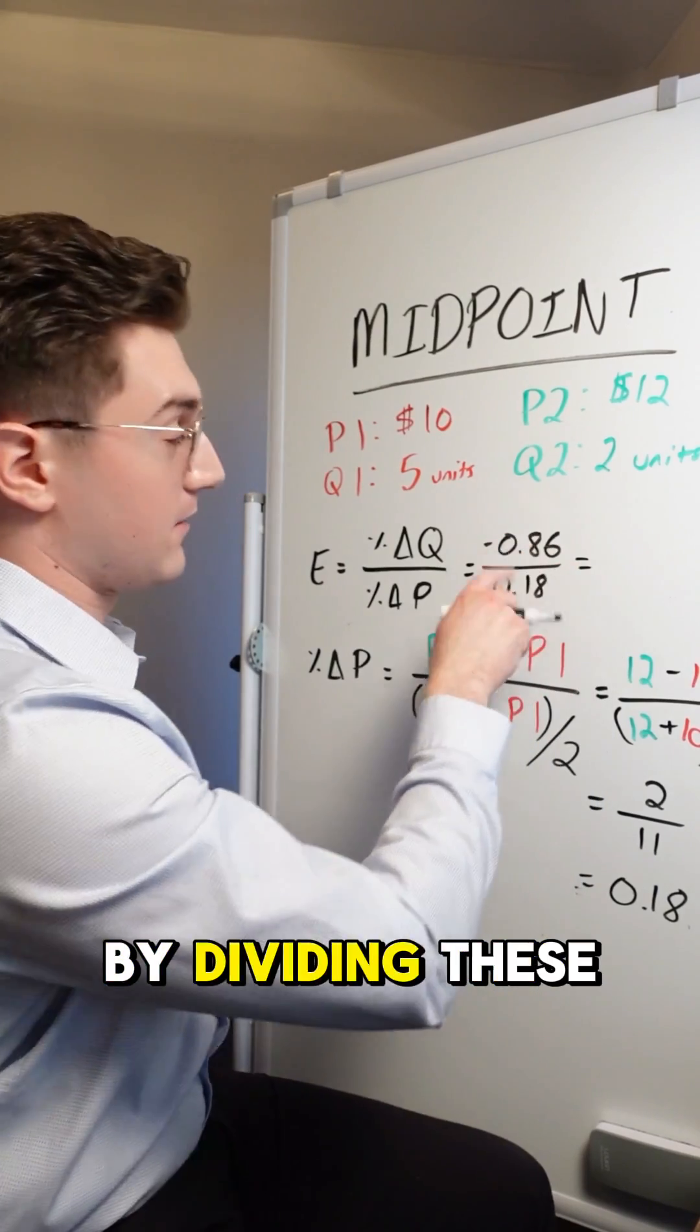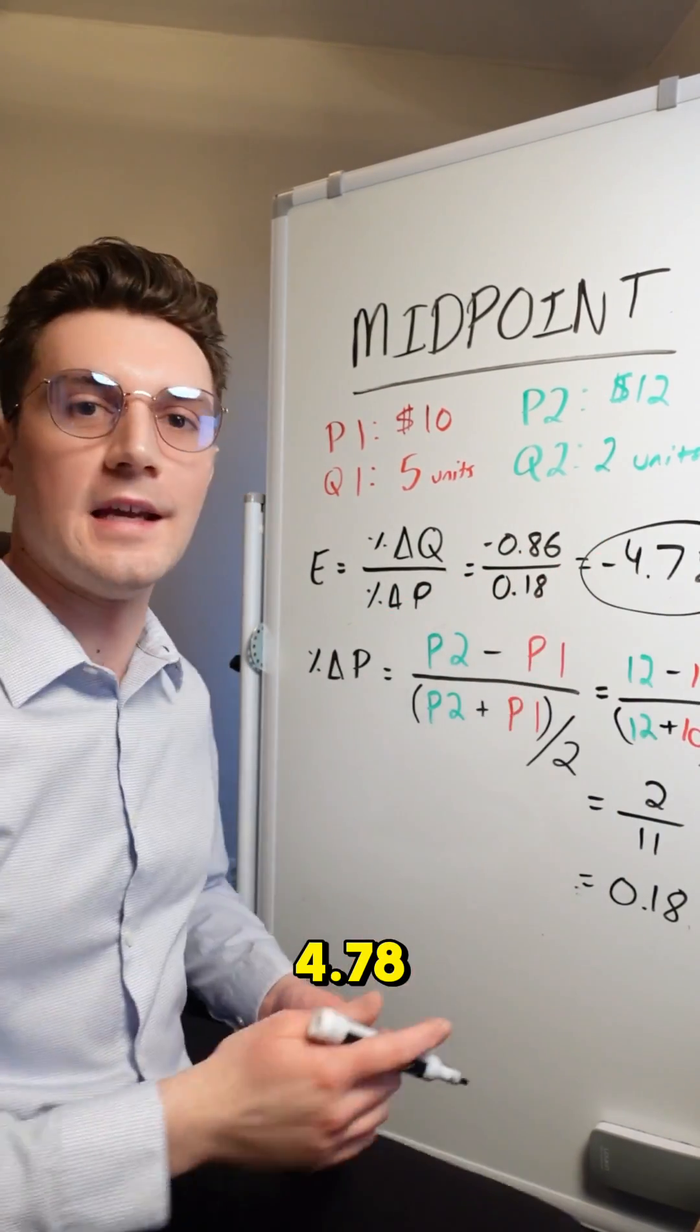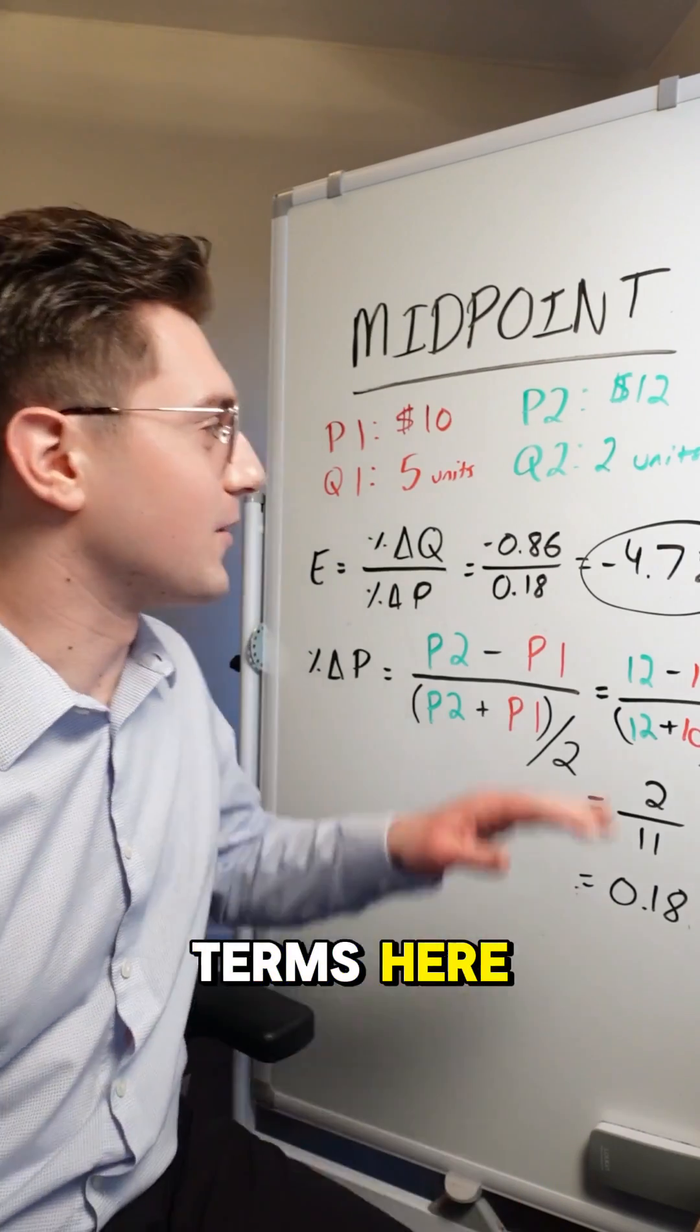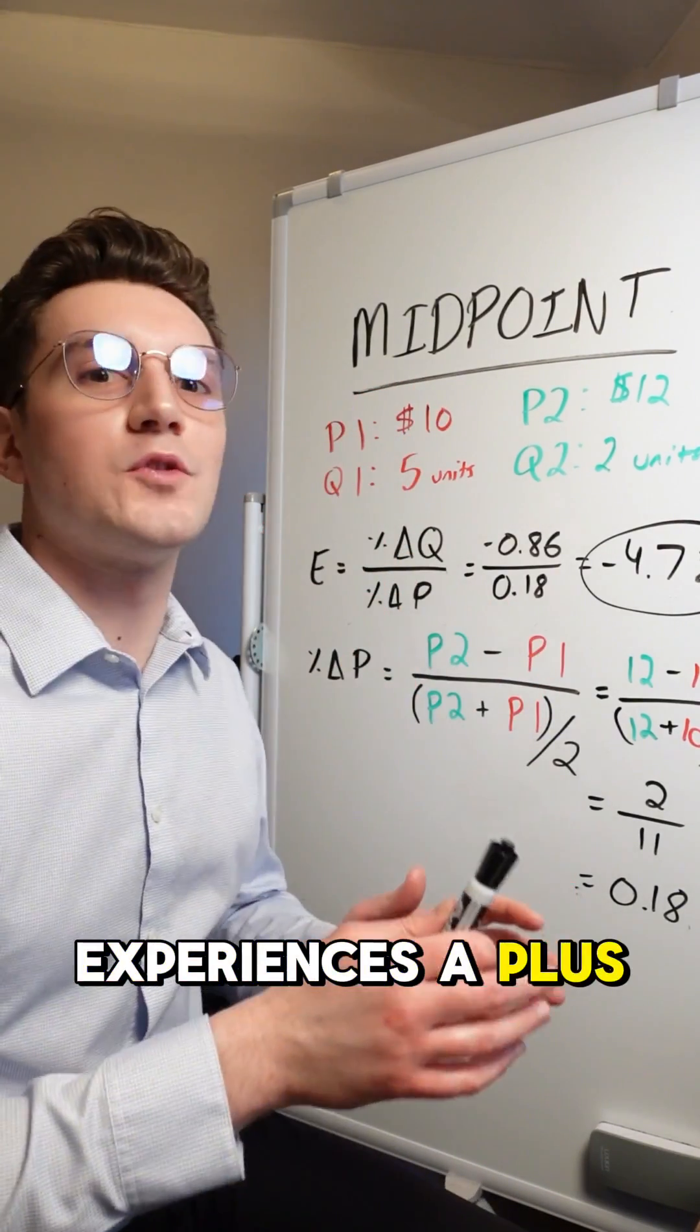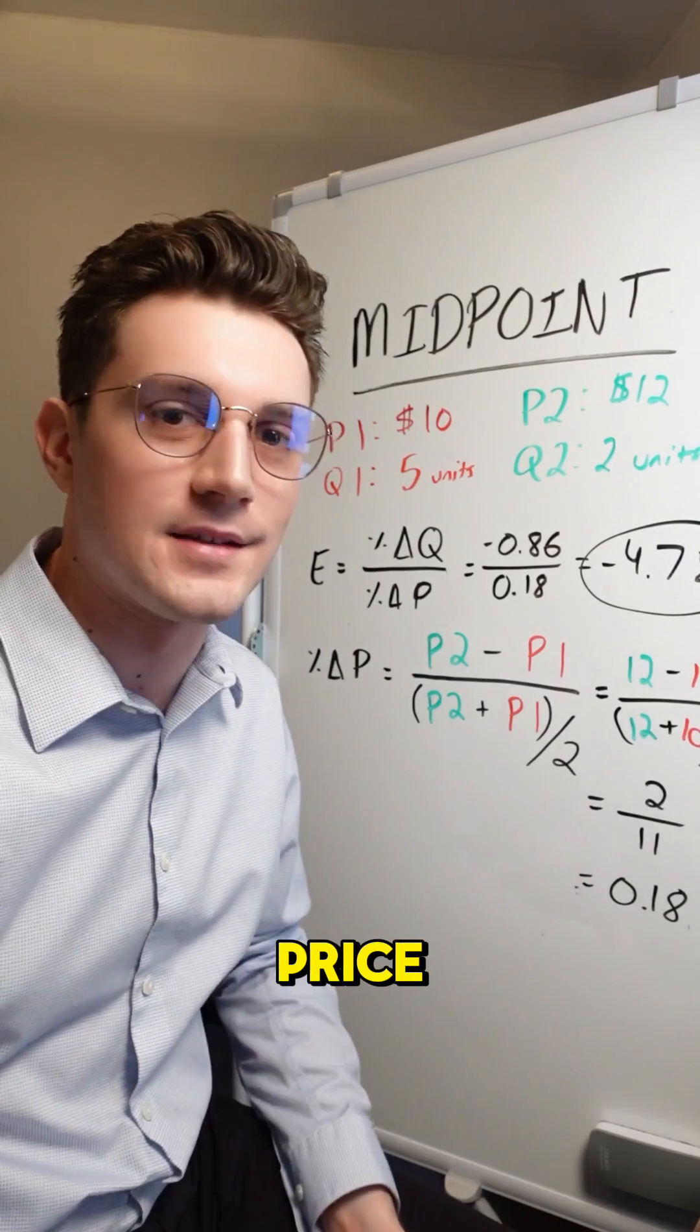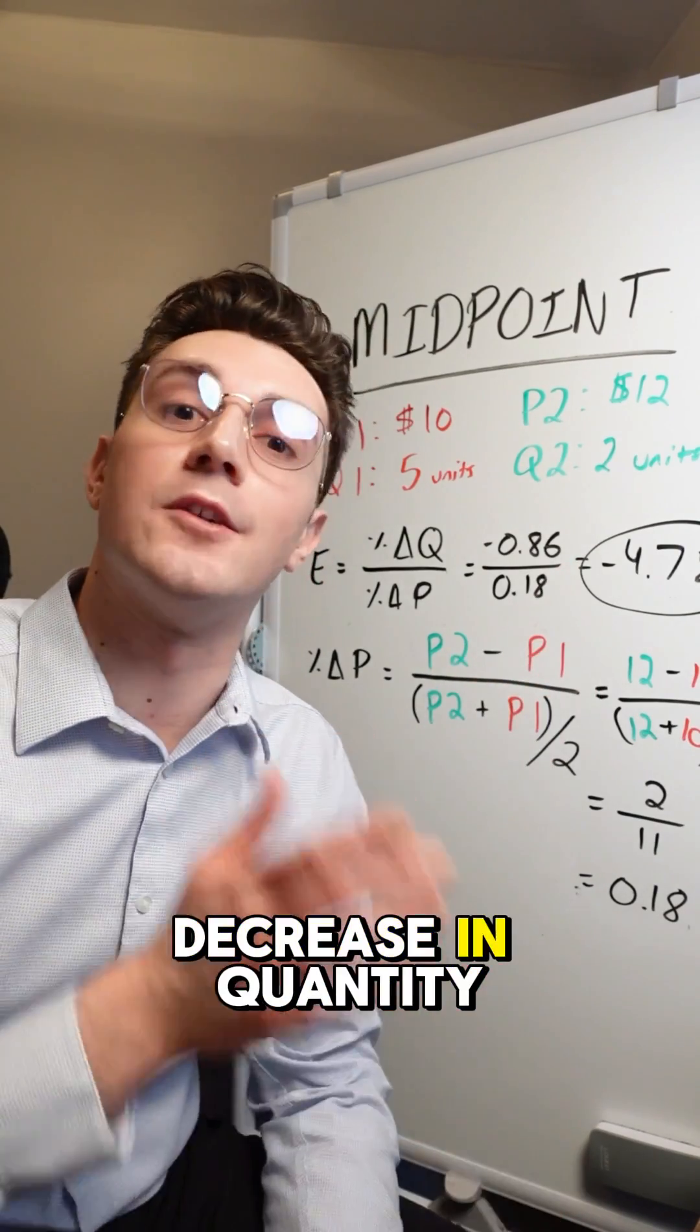we can calculate the elasticity by dividing these two values, resulting in negative 4.78. Translated into simple terms here, when this good, whatever we're working with here, experiences a plus 1% increase in price, it's met with a negative 4.78% decrease in quantity.